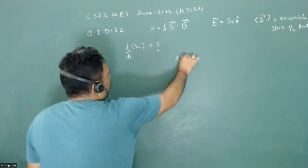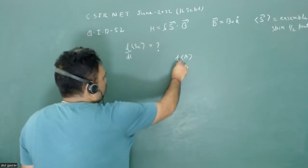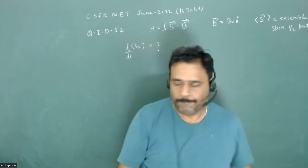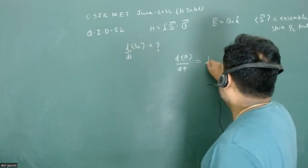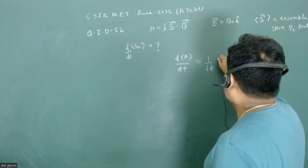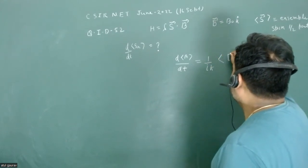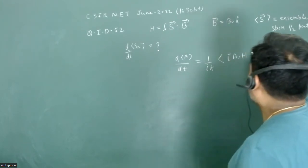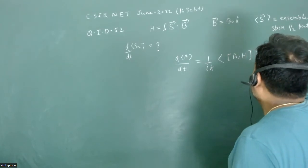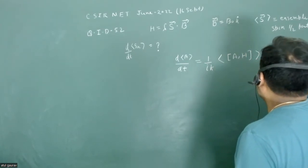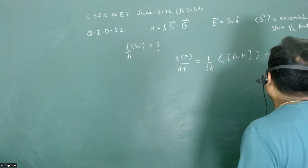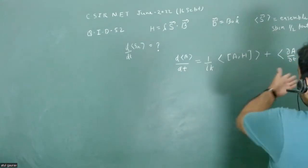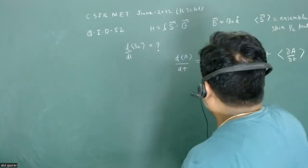If we have any operator a, then d of expectation value upon dt is equivalent to 1 upon ih bar times the expectation value of commutator of a and h, the Hamiltonian, plus expectation value of del a upon del t if a is the explicit function of time. But here sx is not explicit function of time, then this value is zero.